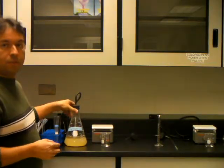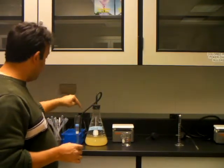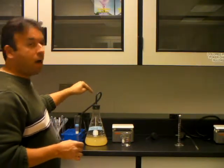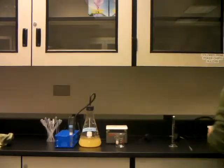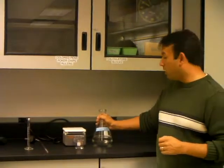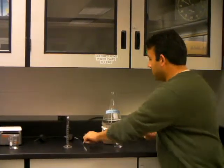Here you have yeast with cornstarch and a little bit of water, and you'll notice that we've put the system in a way that no oxygen could get into this beaker. Over here, we have just yeast with cornstarch, and what we're going to do is we're going to assemble our system this way.